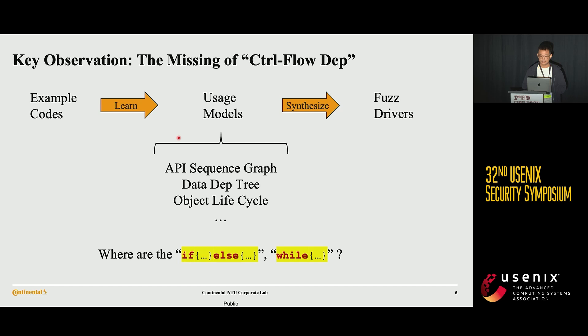Upon this paradigm, we have a key observation that existing solutions failed to properly model the control flow dependency of the API usage. Specifically, existing usage models include the API sequence graph, some data dependency tree, and some object lifecycle model. However, none of them can properly describe common control flow structures like conditional branches and loops. These structures are critical components for API usage. For example, you may only call an API under certain conditions, or you need to check the return status of some API to determine whether to continue execution of following APIs. Without them, the effectiveness of the drivers can be compromised. Based on this observation, we decided to use a more descriptive usage model — the automata.